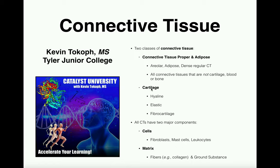Cartilage falls into a different class by itself, and there are three types we're going to look at: hyaline cartilage, elastic cartilage, and fibrocartilage. Now all connective tissues really have two major components: cells and what's called the matrix, also called extracellular matrix.